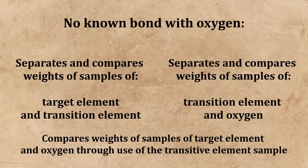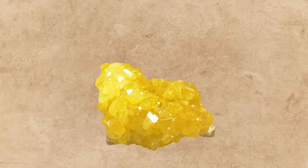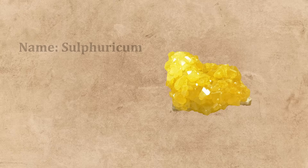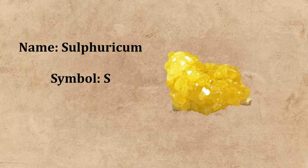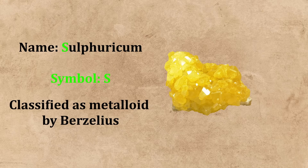For example, let's take the element sulfur, for which Berzelius did not find a direct chemical compound with that of oxygen. In his paper, he gives this element its Latin name sulfuricum. He then gives it the symbol S, for it is a metalloid, and therefore, by his rules, gets the first letter of its Latin name.